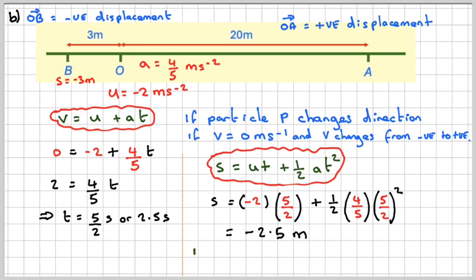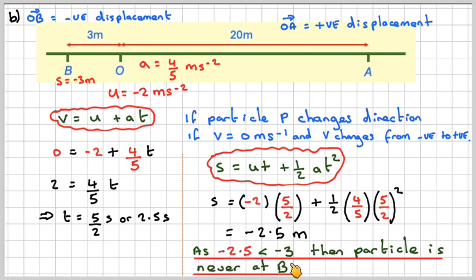So, therefore, we can say, as minus 2.5 is greater than minus 3, then the particle was never going to get to B, because at that particular point, it's going to change direction and come back up here.